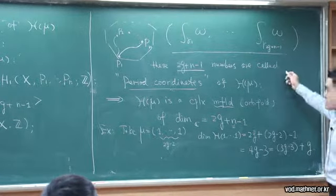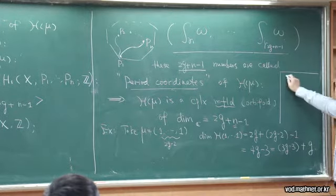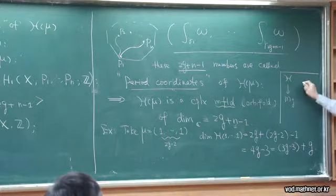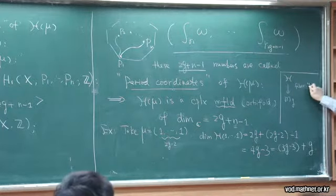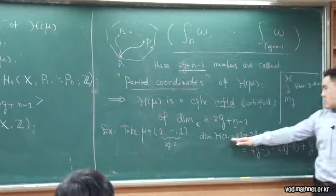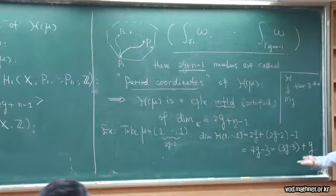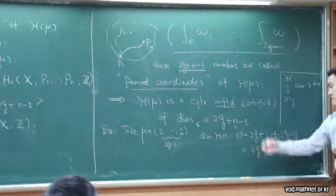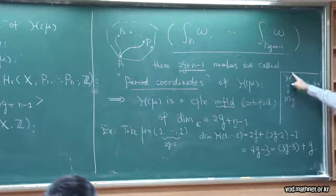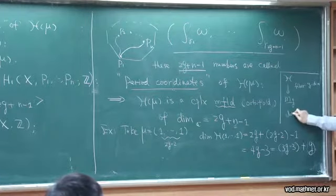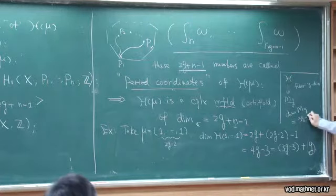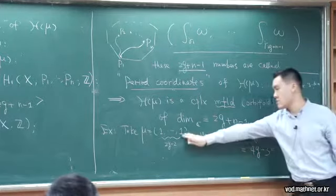And 4g−3 = (3g−3)+g. If you still remember, the total Hodge bundle over the moduli of genus-g Riemann surfaces is a rank-g bundle, so the fiber has dimension g. Here, taking the general partition (1,1,...,1) corresponds to a one-form with only simple zeros, which should give an open subset inside the Hodge bundle of equal dimension. The moduli of genus-g Riemann surfaces has dimension 3g−3, so they add up to 4g−3, which is the right dimension for this open dense subset inside the Hodge bundle.